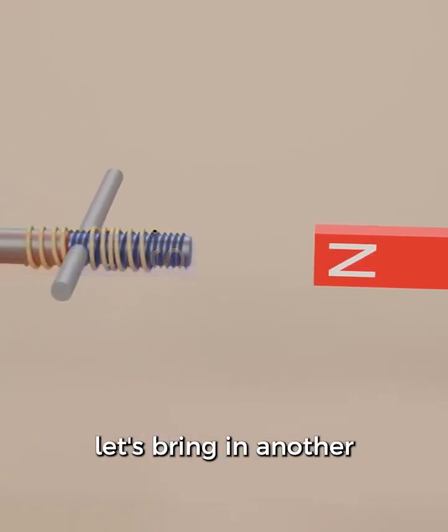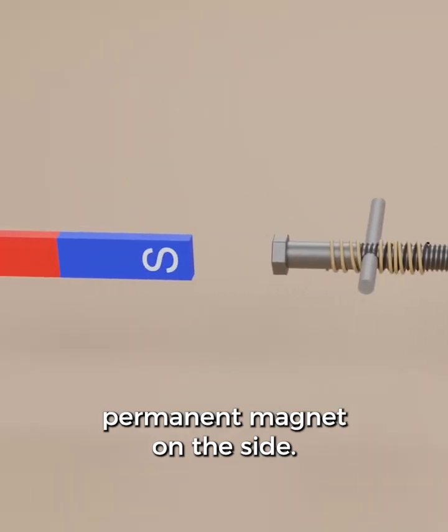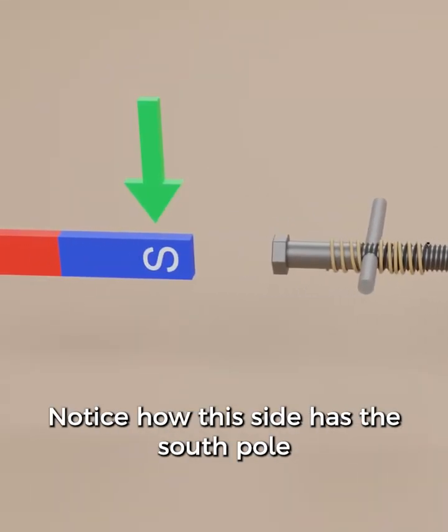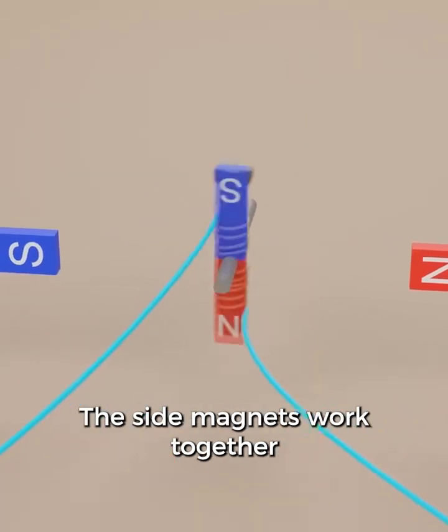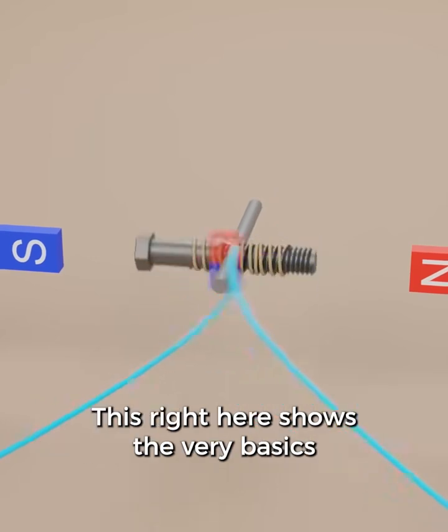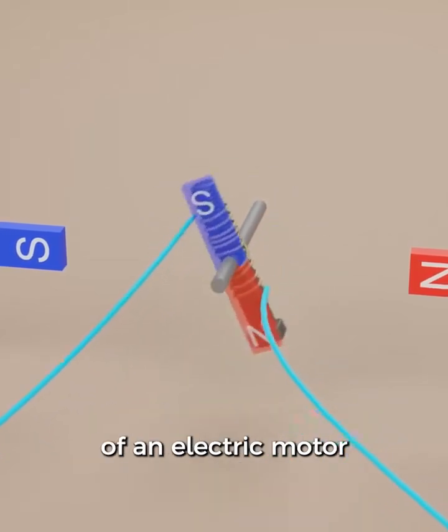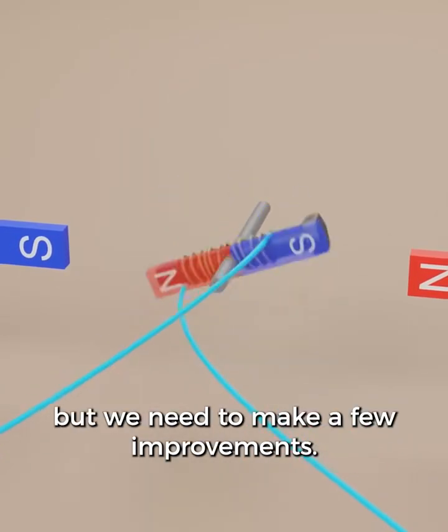To make this stronger, let's bring in another permanent magnet on the side. Notice how this side has the south pole towards the center, and this side has the north pole towards the center. The side magnets work together to spin the one in the middle. This right here shows the very basics of an electric motor, but we need to make a few improvements.